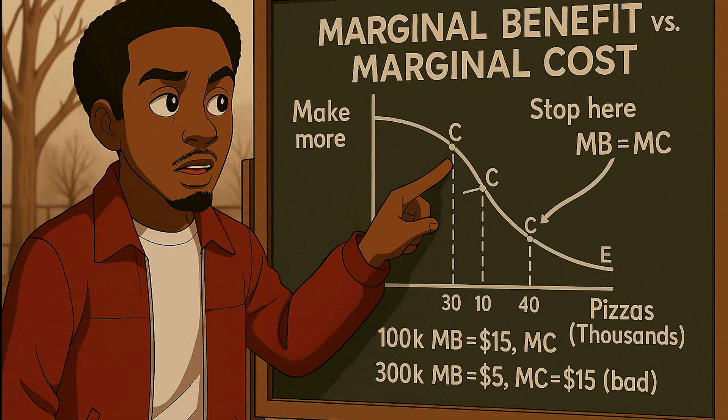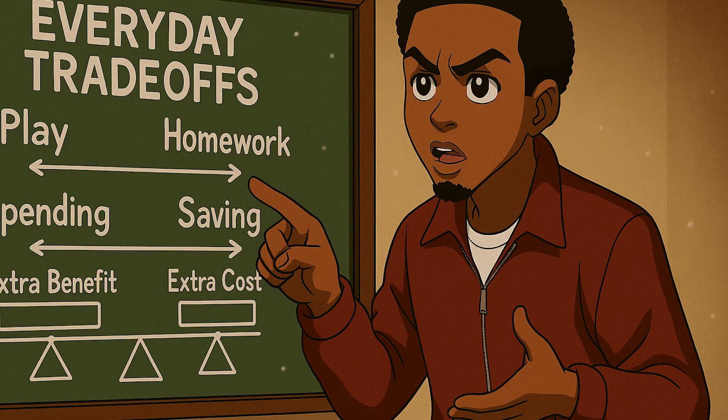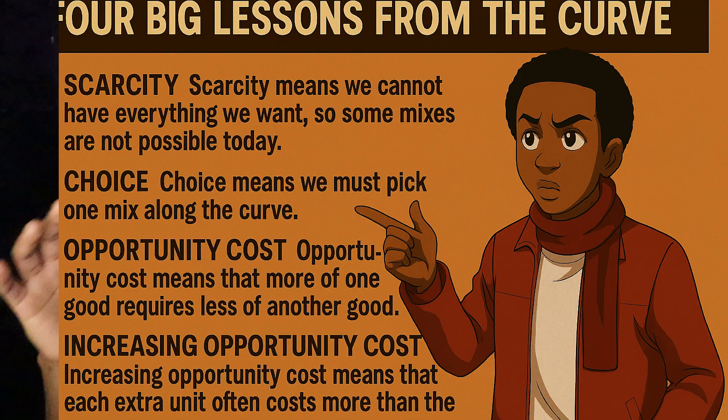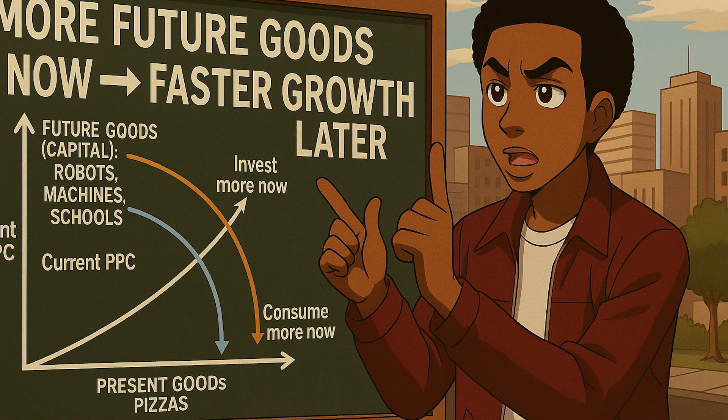What we choose to produce today shapes how much we can produce tomorrow. Think of two categories on the axis: goods for the present and goods for the future. Future goods include capital equipment, research, education, and preventative health care — these create growth later. Present goods include everyday consumer items like food, clothing, and entertainment. Comparing two countries that start the same: Presentville chooses lots of present goods and few future goods, while Futureville chooses more future goods and fewer present goods. Later, Futureville's PPC shifts outward more than Presentville's because it invested in future capacity. The opportunity cost was fewer consumer goods today, but the payoff was more capacity tomorrow. Neither choice is automatically right or wrong — it reflects different preferences — but the trade-off is clear: more future goods now usually means faster growth later.